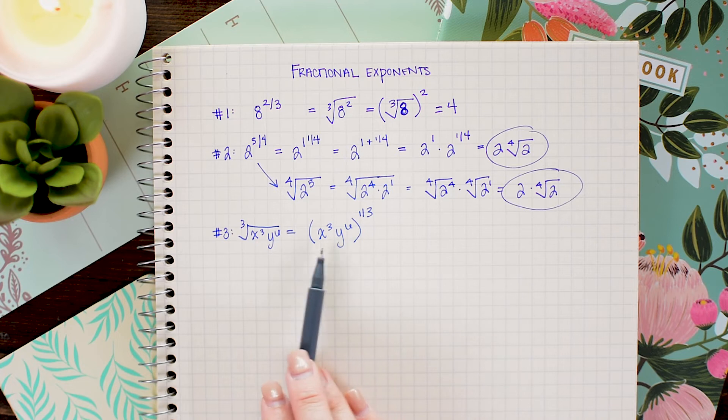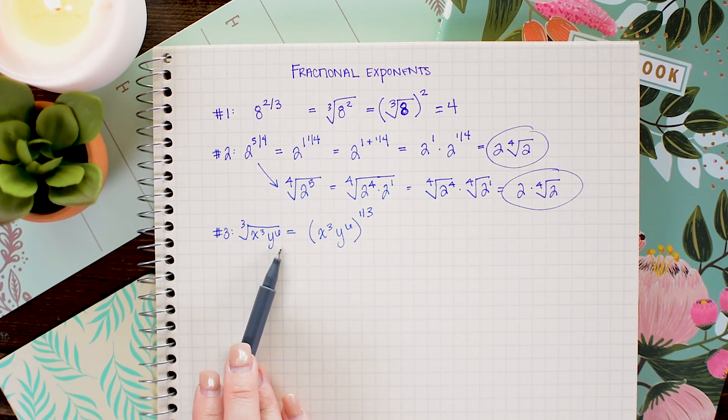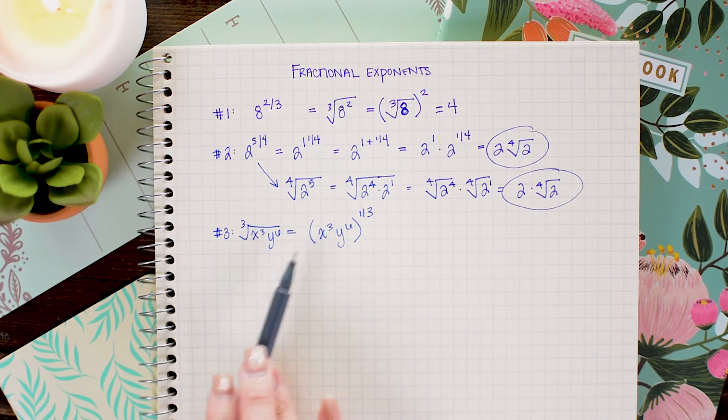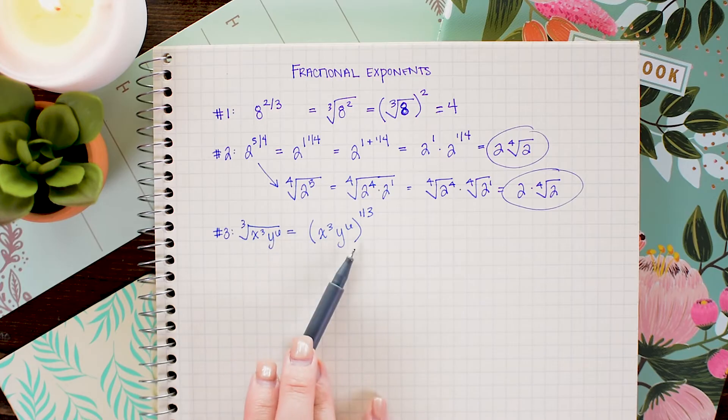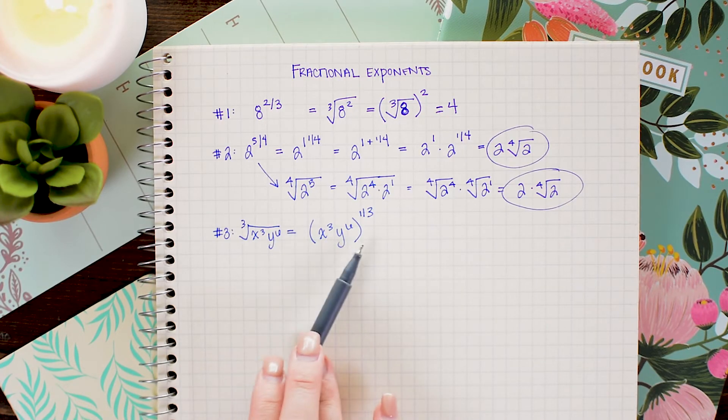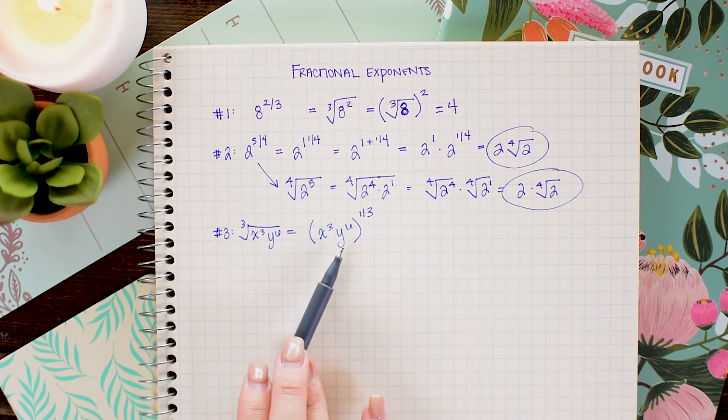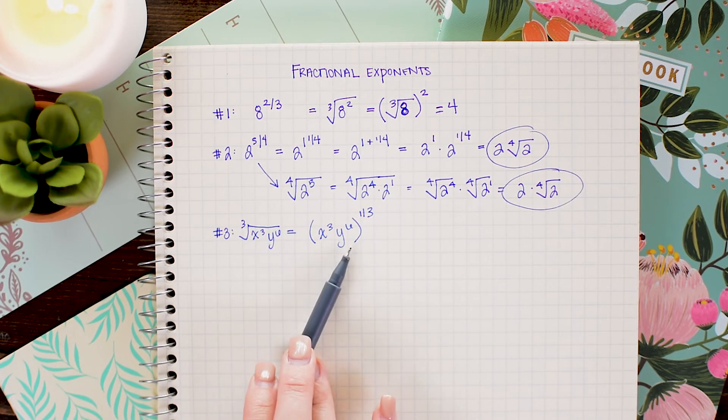It's really important here to remember to keep parentheses around everything that was inside of the radical symbol because I want that power to be applied to everything. If I didn't write this parenthesis, I could easily mistake the 1 third power just on the y instead of on the x and y.